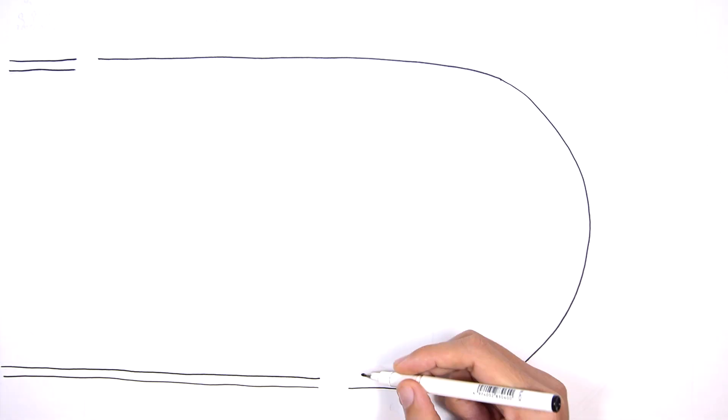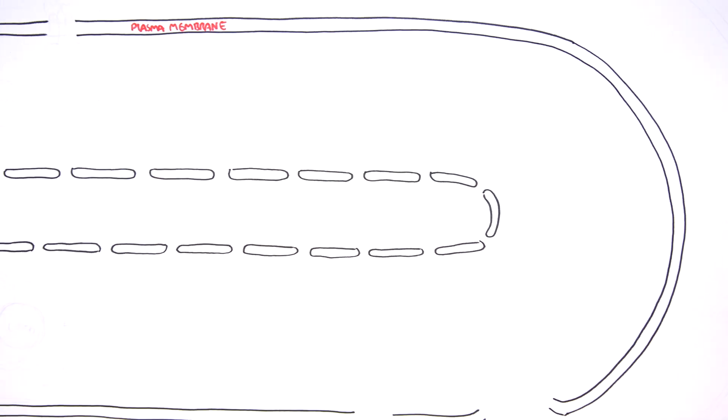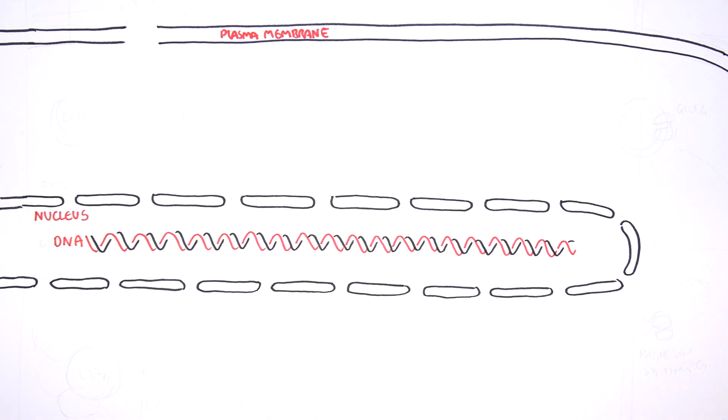Here is a fat cell. This is a cell's plasma membrane. Inside the cell, there is a nucleus which contains the DNA, our genetic material. Surrounding the nucleus is the cytoplasm.